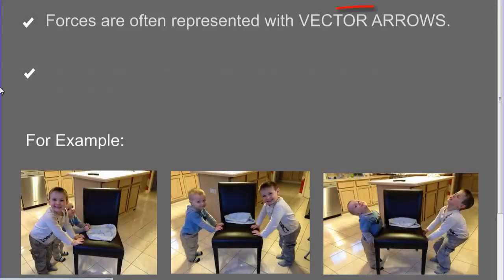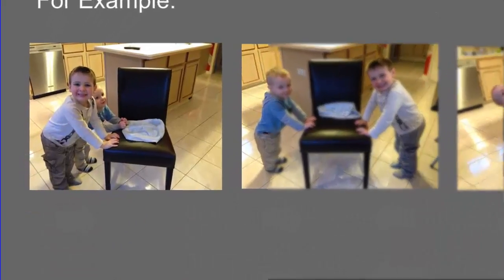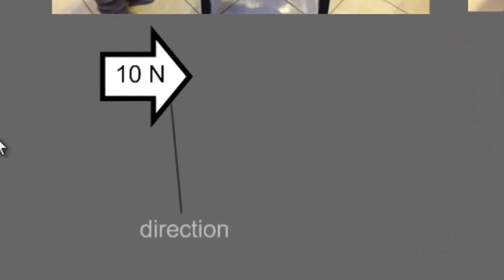Forces are often represented with vector arrows. Vector arrows tell you the magnitude and the direction of the force. For example, in this situation we have two little boys pushing on one side of the chair. If we were to add together their force — let's say they both pushed with 5 newtons — we have a total of 10 newtons pushing on the left side of this chair, making the chair potentially go towards the right-hand side.